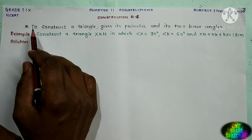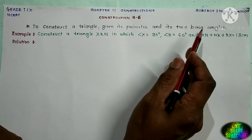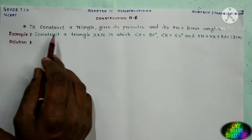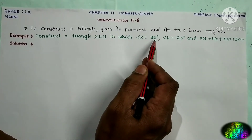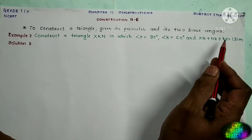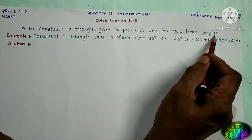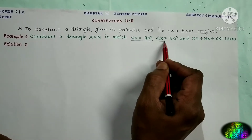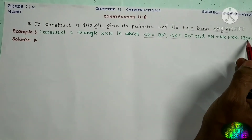Construction 11.6 is how to construct a triangle given its perimeter and its two base angles. For this construction 11.6, I have taken one example: construct a triangle XKN in which angle X is equal to 90 degree and angle K is equal to 60 degree, and XN plus NK plus KX is equal to 13 centimeter. These are the two base angles, and the perimeter is XN plus NK plus KX equal to 13 centimeter.